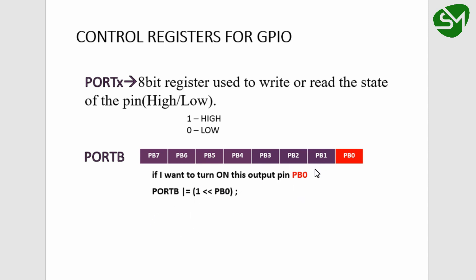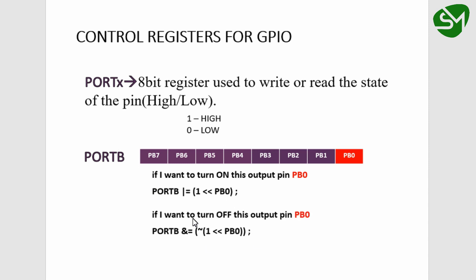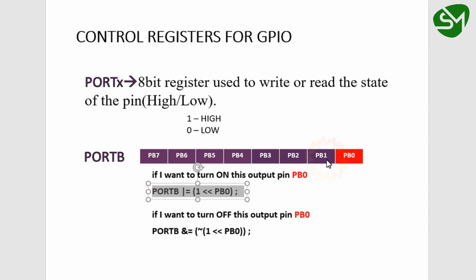This line will set the PB0 bit of port B. If I want to turn off output pin PB0, I can write PORTB &= ~(1 << PB0). This line will clear the PB0 bit irrespective of its position, and the previous line will set the PB0 bit irrespective of the value it is holding.